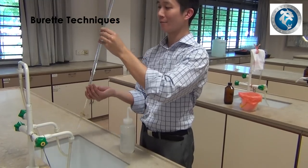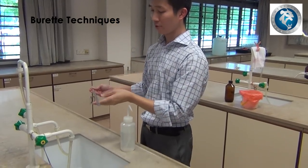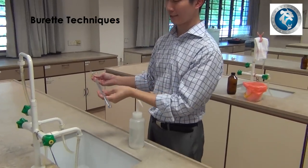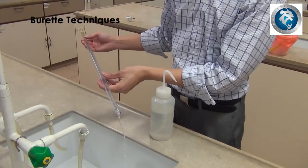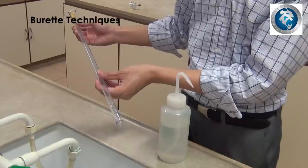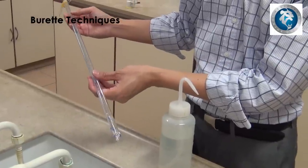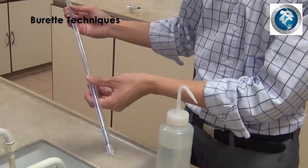Once that is done, proceed to clean the top part of the burette. While washing the top part of the burette, roll the burette to allow deionized water to clean it thoroughly.